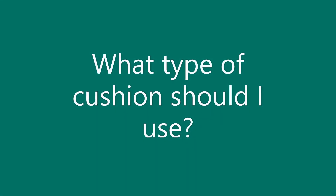What type of cushion should I use? Cushions are made of different types of materials. They provide different levels of support and pressure relief and have different qualities to be aware of. Even if your insurance will only buy you a new cushion every two to three years, you may be able to get a loaner before that if your current cushion is not working well for you.